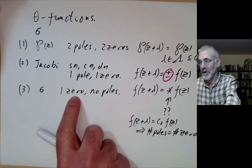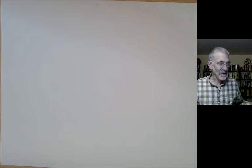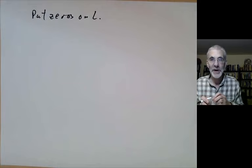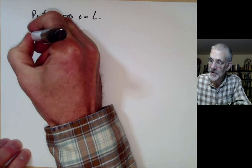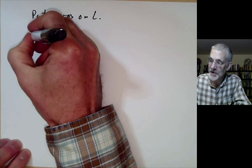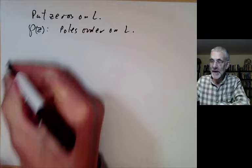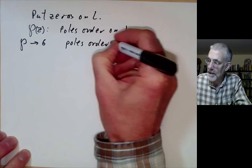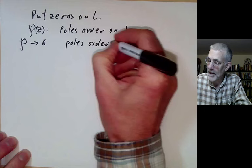So how do we find a function with one zero in a fundamental domain and no poles? Well, first of all, we have to decide where to put the zeros. It's pretty obvious — we put the zeros on the lattice L. So in particular, we should have a zero at L. We have a function p of z which has poles of order 2 on L. So the idea is we want to start with p and go to our sigma function, and we want to convert poles of order 2 to zeros of order 1.